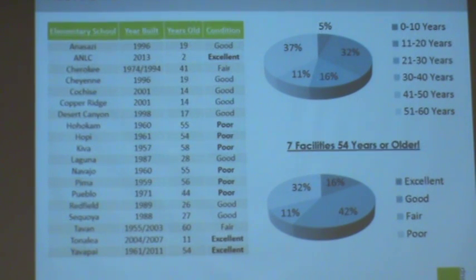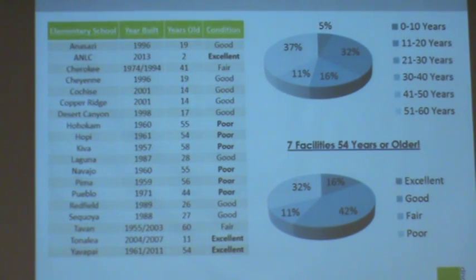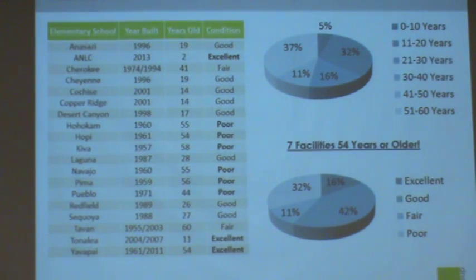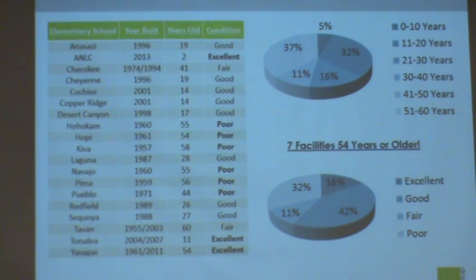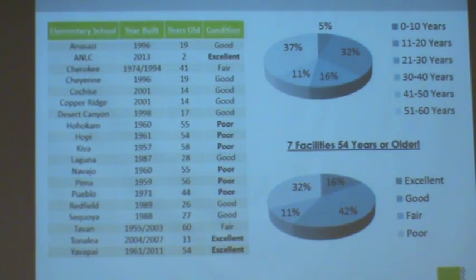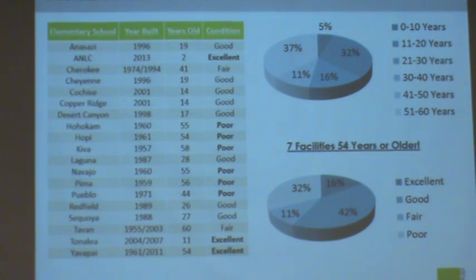You're going to see an information sheet on all 19 schools. We only looked at schools, no other facilities. This is a summary of each school — the year it was built, how many years old, and the condition it was in. The most important thing I want you to get out of this slide is that seven of your schools are 54 years or older, which was pretty surprising when we started putting everything together.